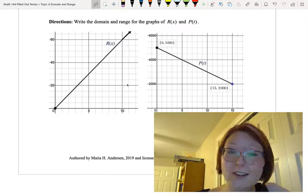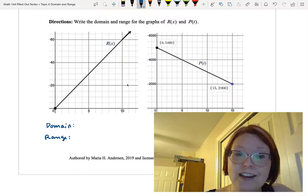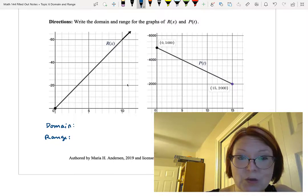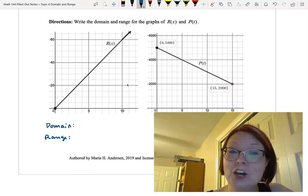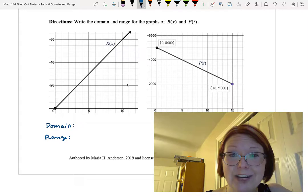Okay, hopefully you gave that a try. The graph of r of x has an endpoint at the origin and it's an increasing line passing through the point 10 comma 60. There is no defined right endpoint on the graph.